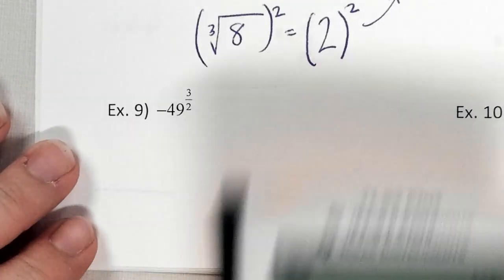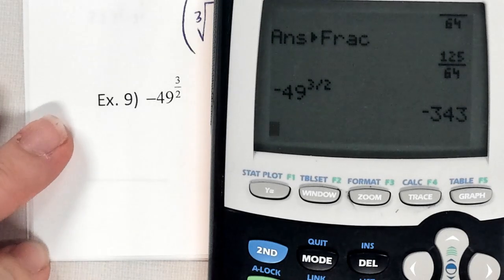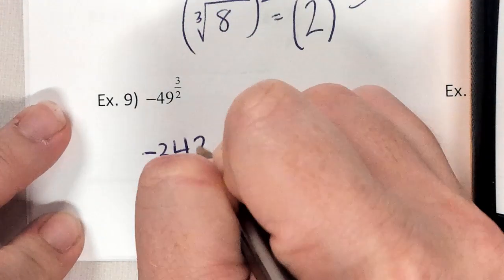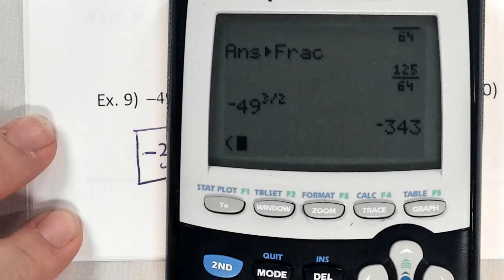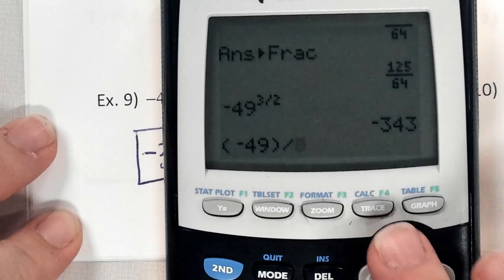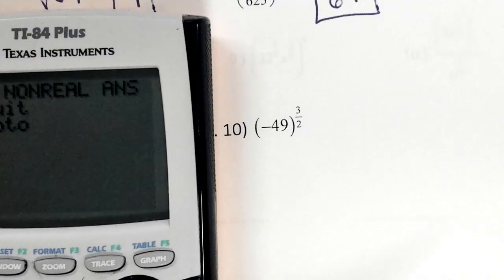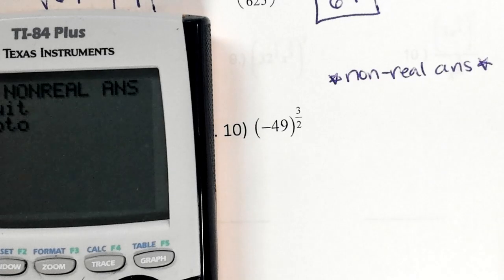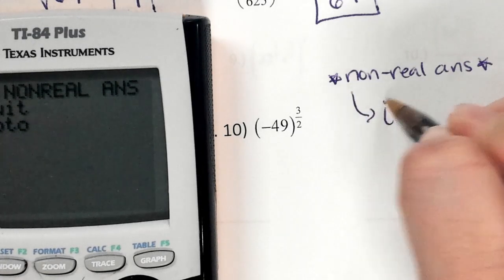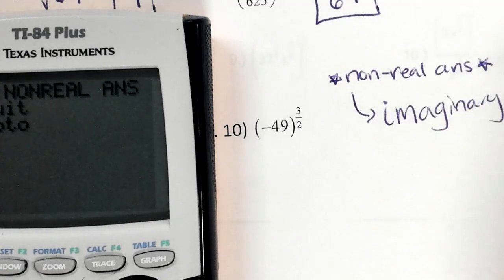Look at example nine — type it just the way you see it. Negative 49 to the 3 over 2 power gives me negative 343. Now if I type this one the exact way I see it, what's the error message? Non-real answer. What do you think non-real answer means? Imaginary. If it says non-real, it's because it's not real, which means it's imaginary.